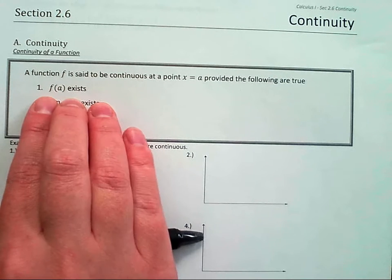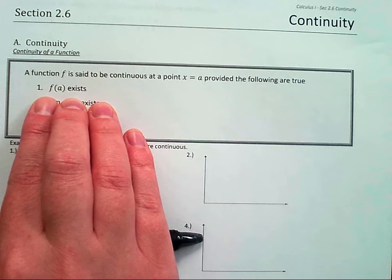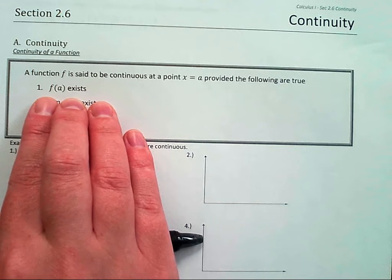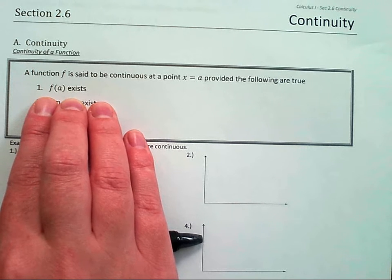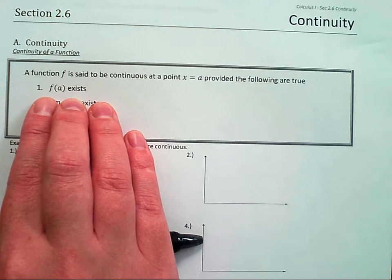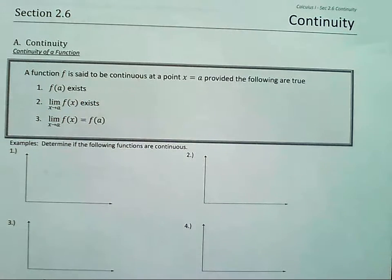f(a) exists, right? So that means I have a y value for my x value. So there's a hole, that's kind of like there's a hole, right? f(a) wouldn't exist if there was a hole.